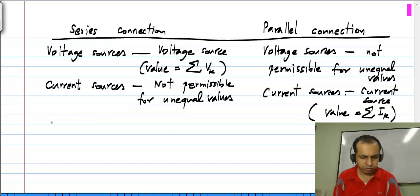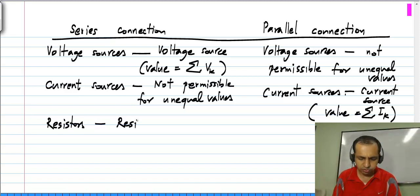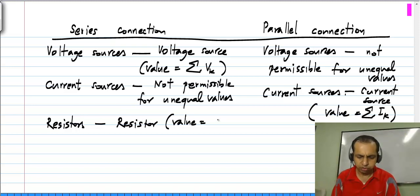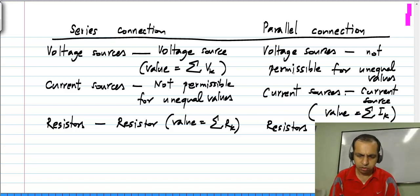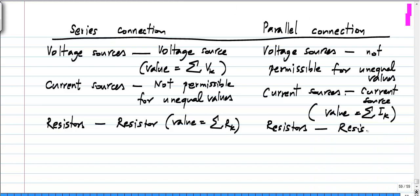If you take a series connection of resistors, the result is still a resistor whose value is the sum of individual resistances. And if you take a parallel connection of resistors, the result is still a resistor whose value is the sum of individual conductances.